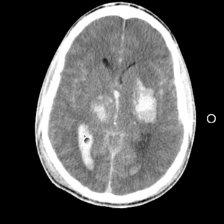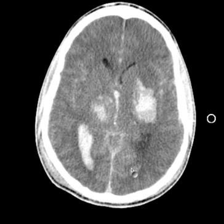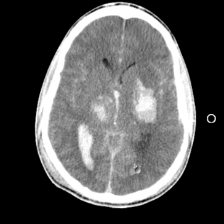This is in the right lateral ventricle. Here is the frontal horn of the right and left lateral ventricle. Here is the occipital horn of the right and left lateral ventricle. This larger area is often called the atrium. So there's blood in both lateral ventricles, and of course it's heavier than CSF, so it goes to the dependent part — to the back rather than the frontal horns. There's blood more in the right lateral ventricle than the left.